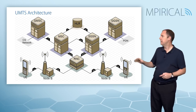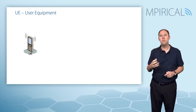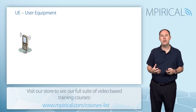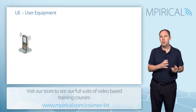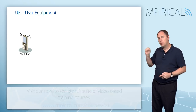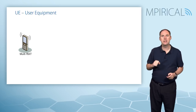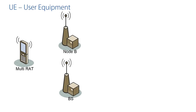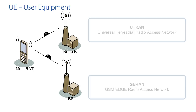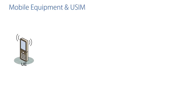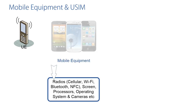Let's start with the user equipment — the mobile. In UMTS, the mobile is called the User Equipment or UE, unlike GSM where it's called the mobile station. We'll also hear the term multi-RAT, multi radio access technology, because most UMTS devices support multiple technologies. For example, they can connect to UMTS but also to GSM, GPRS, or the GRAN.